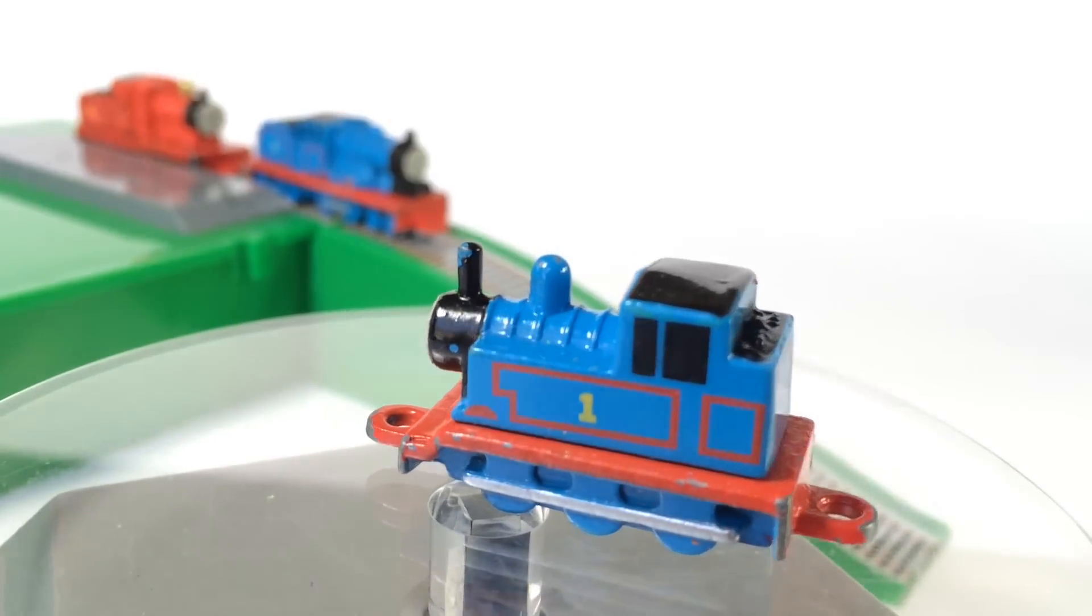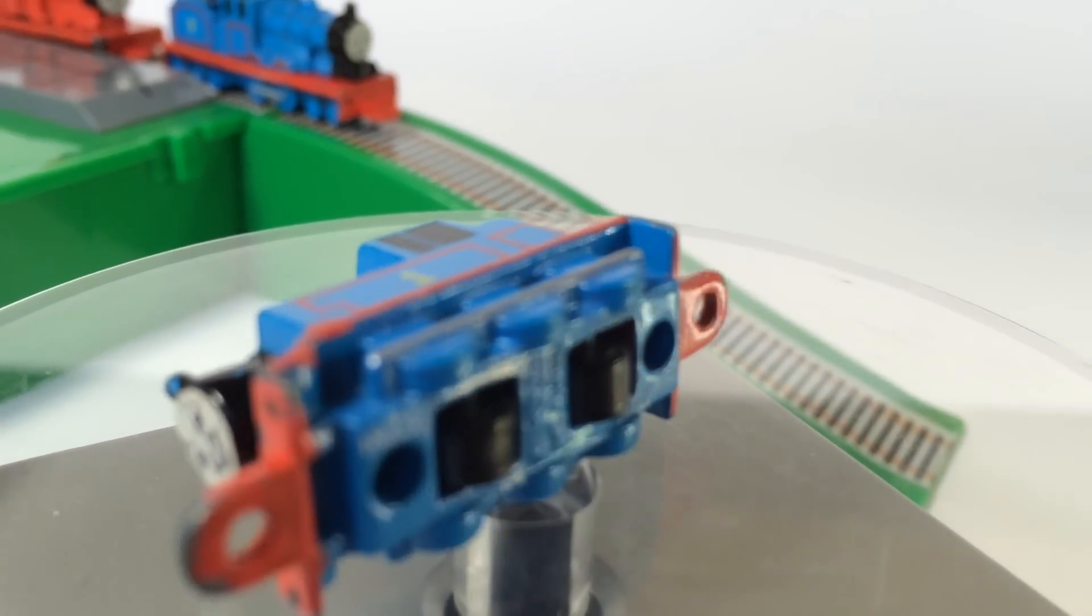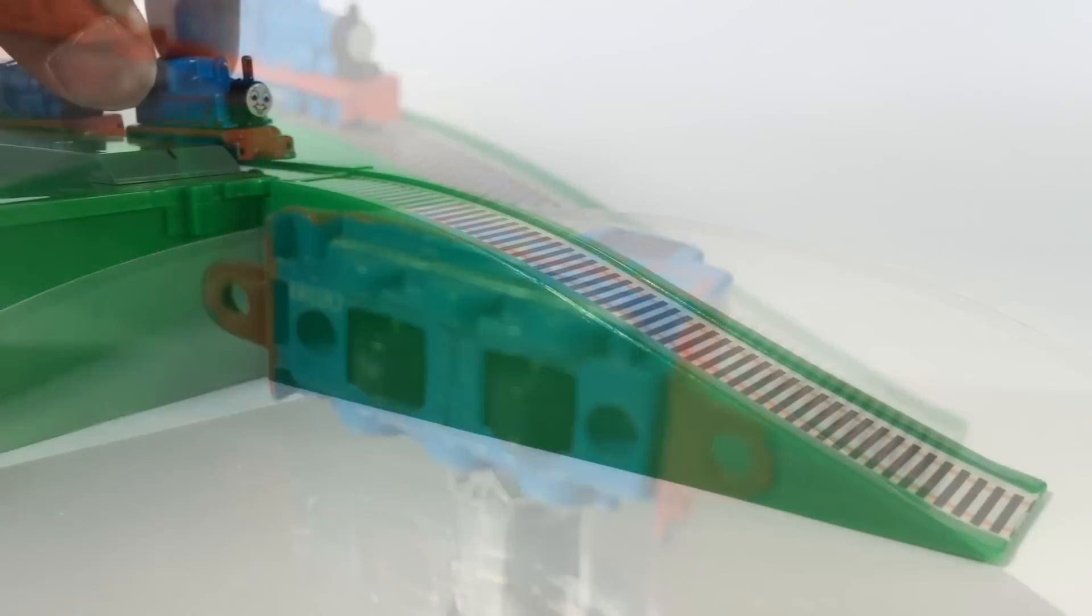And this diecast also has wheels, look at this. Here you can see Thomas, Thomas number one tank engine. Minis, and now you're gonna see a comparison between minis and this tiny Thomas. I believe you can now imagine how little this diecast is.